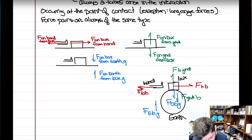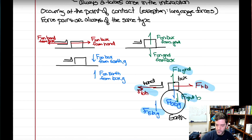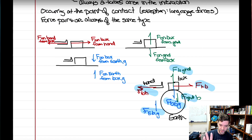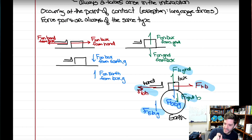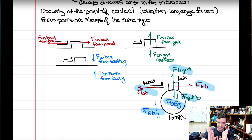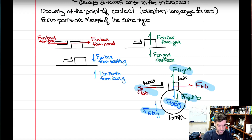Notice there must always be an even number of forces in the entire problem — counting all forces across all objects, I get six here. There aren't an even number acting on any single object; there are three on the box. But each of those forces has a Newton's third law pair acting on a different object. Newton's third law pairs always act on different objects — you cannot have an equal-and-opposite pair both acting on the same object.